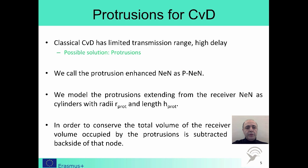Our concern is how protrusions can be utilized to improve the performance of CVD. Remember that classical CVD has limited transmission range and suffers high delay due to the slow diffusion of the messenger molecules. However, protrusions can be utilized to improve the reception process. We call such nanonetworking-enabled nodes that are enhanced by protrusions as PNANs.